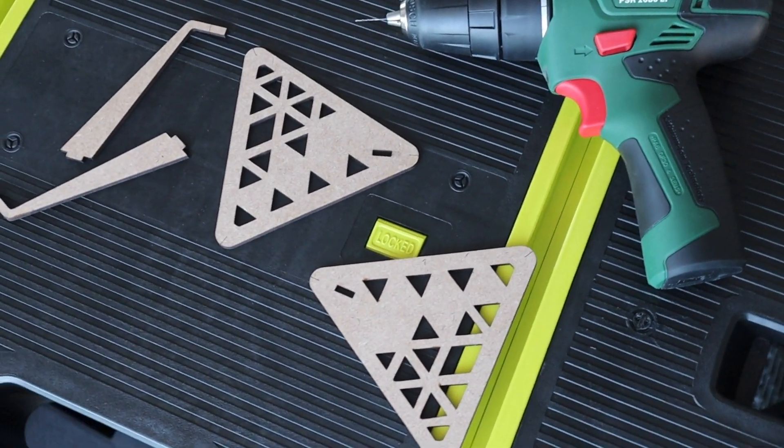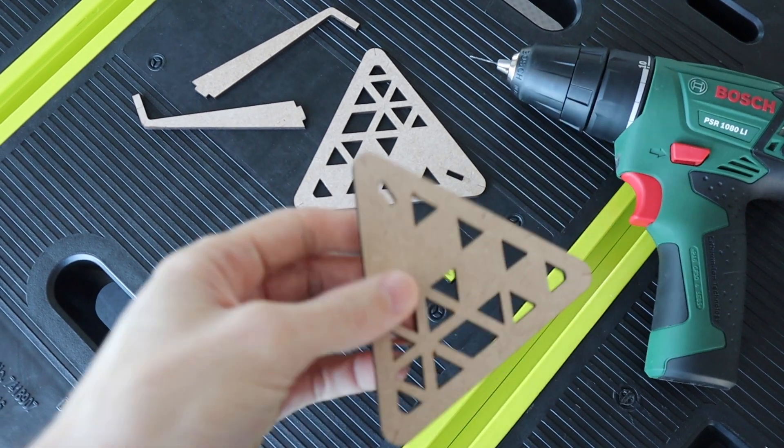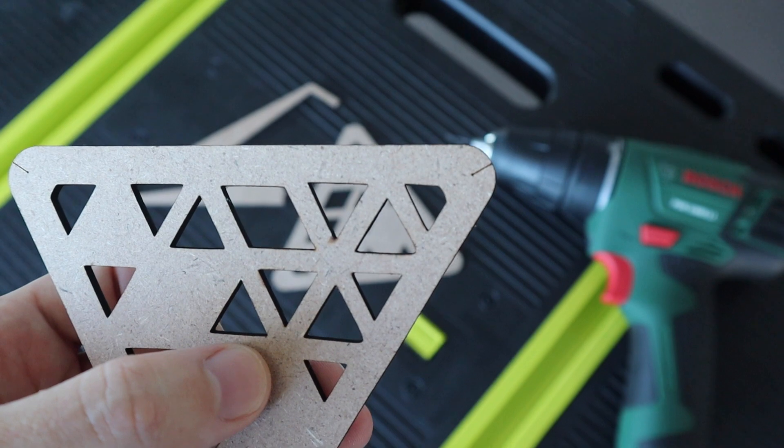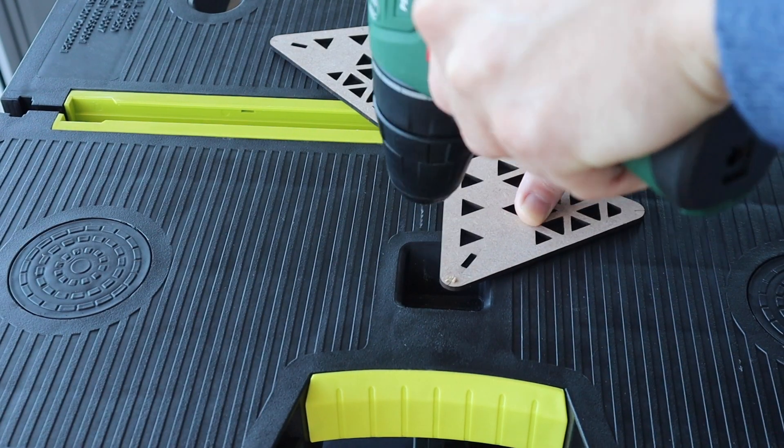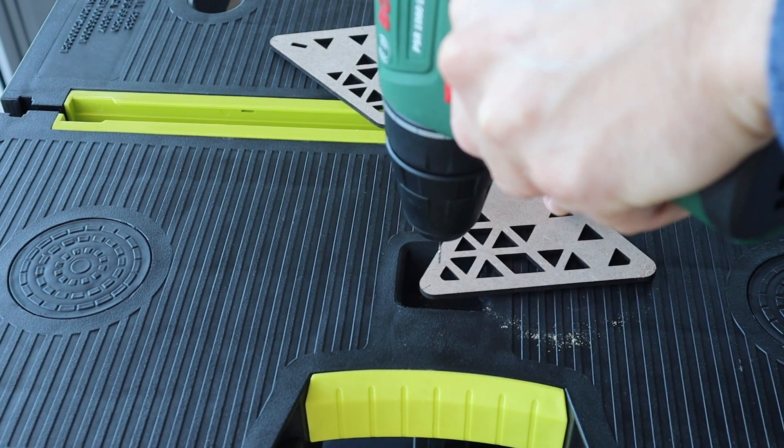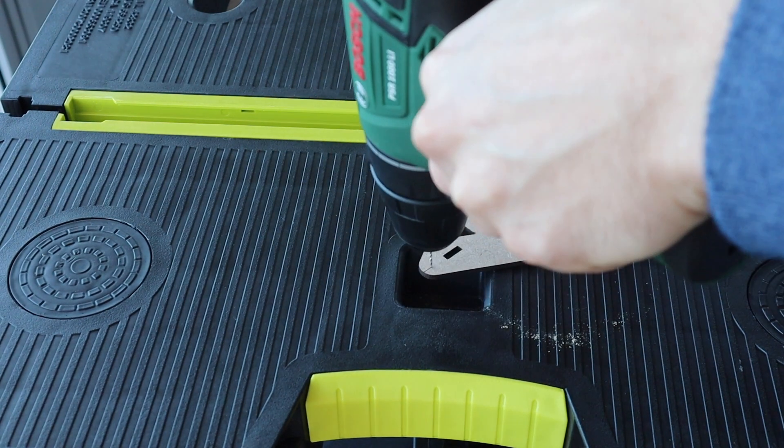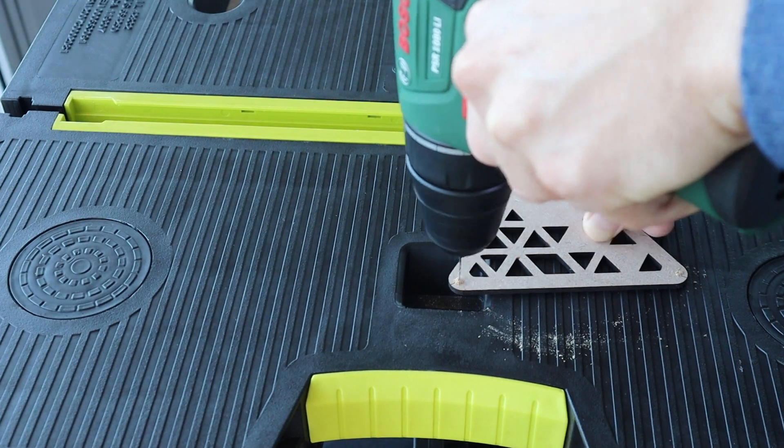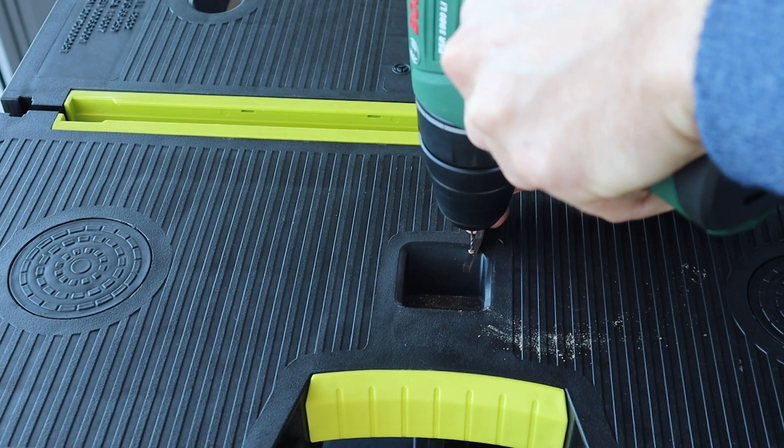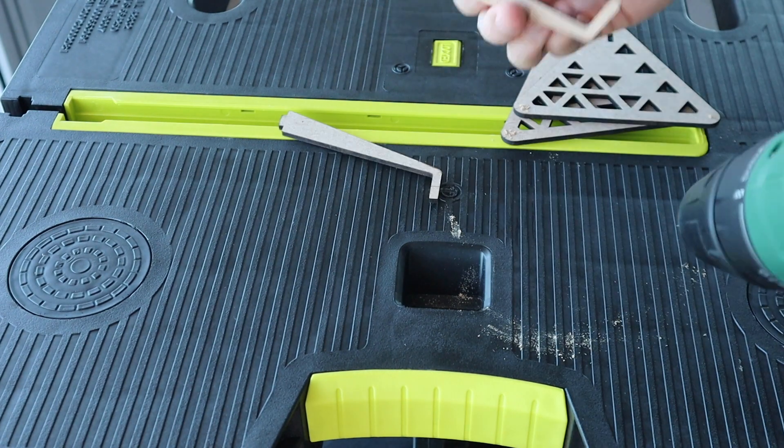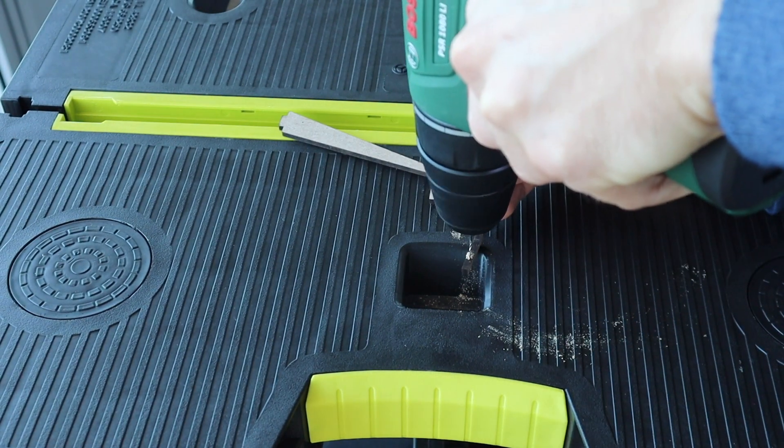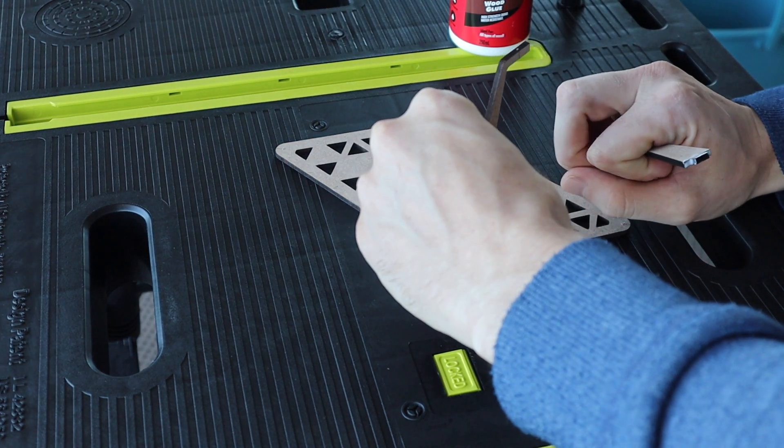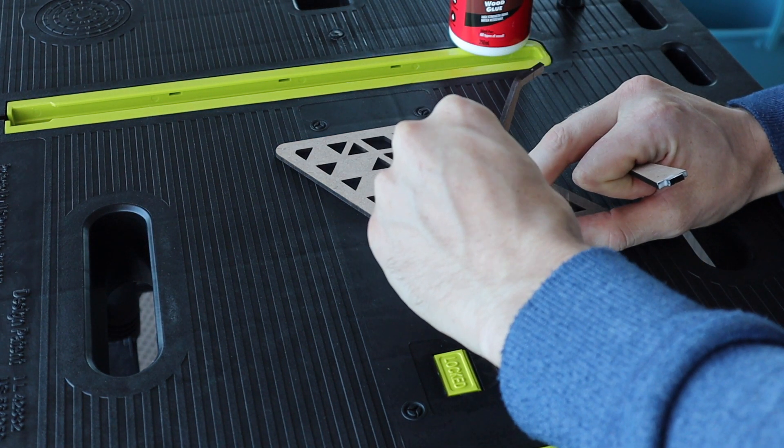Now that the components are cut out we need to drill the holes through them for the fishing line or thread. I drilled these using a 1mm drill bit on the engraved markings. I then glued the vertical pieces in place using a PVA wood glue and waited for the glue to dry.